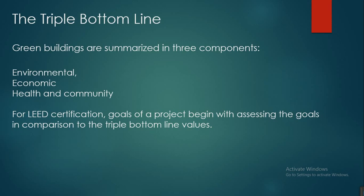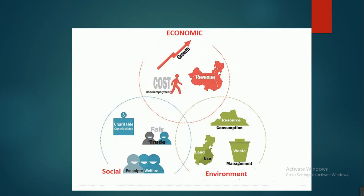The triple bottom line: green buildings are summarized in three components — environmental, economic, and health and community. For LEED certification, the goals of a project begin with assessing those goals in comparison to the triple bottom line values. Here is a schematic diagram of the triple bottom line showing the economic, social, and environmental components and their interrelation.